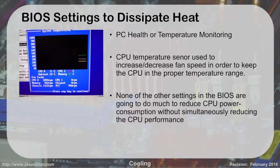The fans boost up higher to try to get more airflow going through there. None of the other settings in the BIOS are going to do much to reduce CPU power consumption without simultaneously reducing performance. So if I drop the CPU power consumption, like on a laptop, it generates less heat, but if I have high performance it generates more heat. My laptop is a great example — showing PowerPoints doesn't kick on the fan, relying on passive heat dissipation. But as soon as I start running virtual machines and increasing processing power, it starts kicking on fans because it's generating more and more heat.